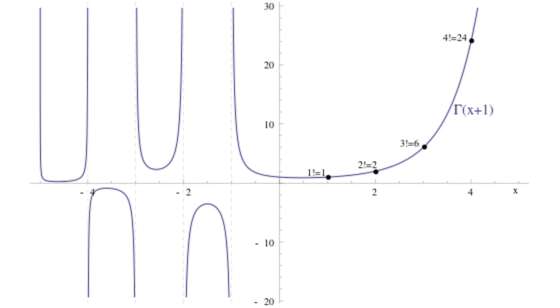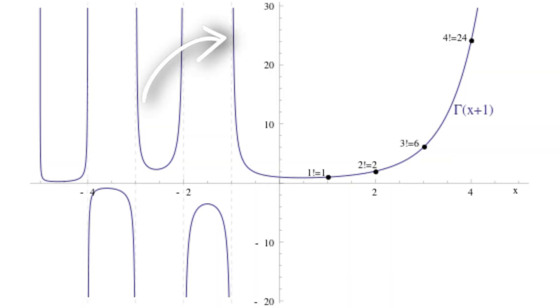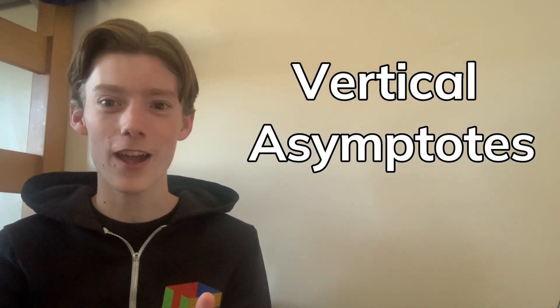So here's the graph of the gamma function. It's all wiggly. It's very cool. But if you have a keen eye, you'll notice a problem, and that is at negative whole numbers the graph shoots off to positive infinity and down to negative infinity at the same time. And these are called vertical asymptotes, so there's like no value at the graph.